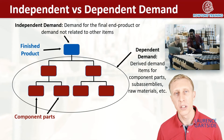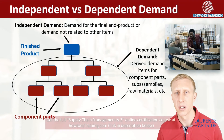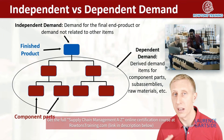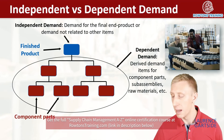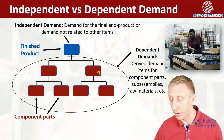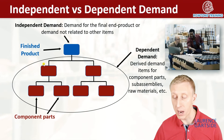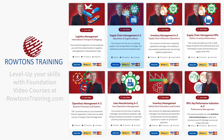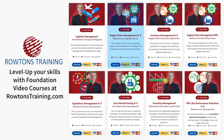We might also call these dependent demand items 'derived demand items.' They could be sub-assemblies or they could be raw materials. Perhaps within our business we make one of these sub-assemblies but we buy in this other sub-assembly.